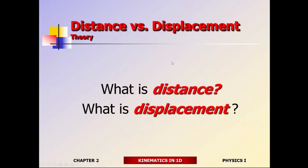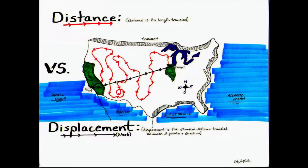So distance versus displacement: distance is the total path of travel, and displacement is the shortest distance between two points. For example, last year I was in California for a temporary gig and I meandered all the way there from Chicago — that was my total path of travel, my distance. My location in California with respect to Chicago is indicated by the displacement vector, the position vector, from starting point to ending point, with the final location indicated as an arrow. That shortest path is your displacement; the total path is your distance.